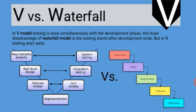Comparing the V model with the waterfall model: in the waterfall model the steps are linear, but in the V model the steps are bent upward in a V shape. In the V model, development phases and testing start at the same time, which was not the case in the waterfall model. The V model gives a little more efficiency because testing starts earlier rather than only after development ends.